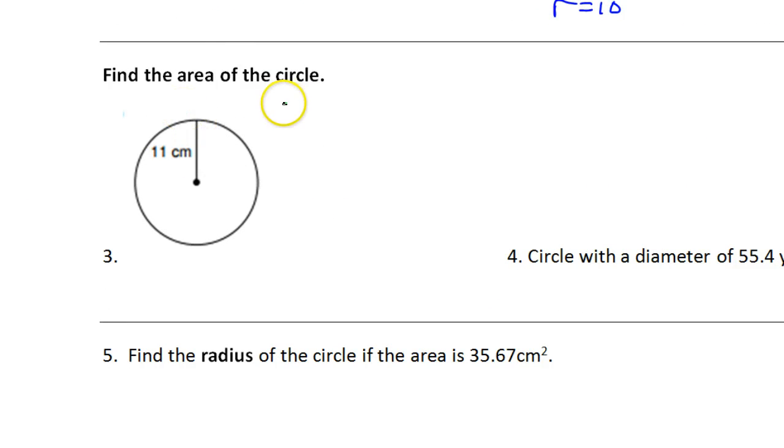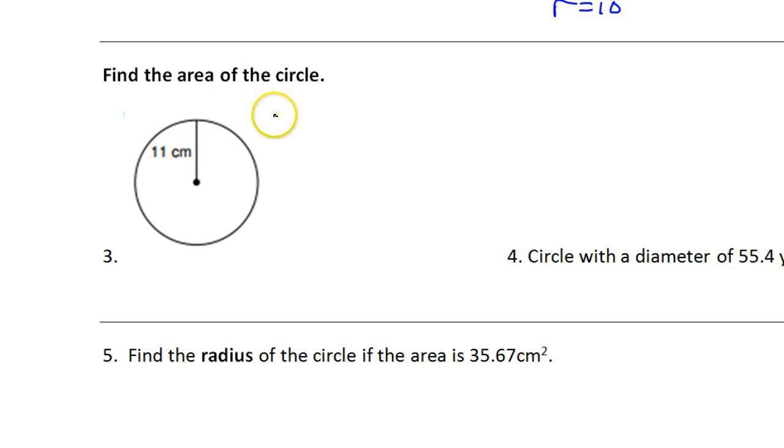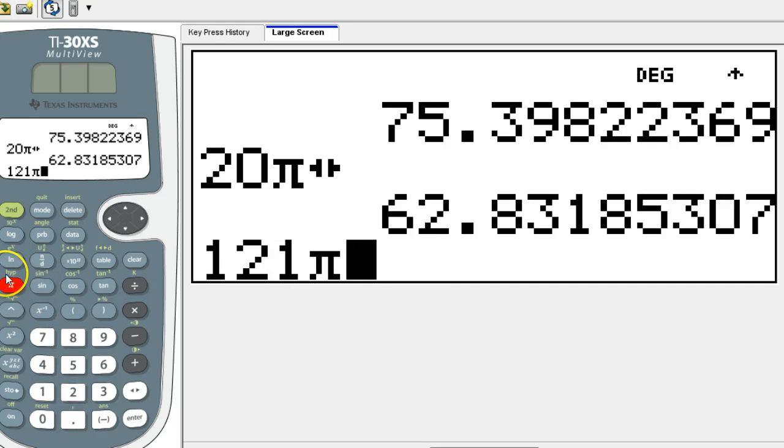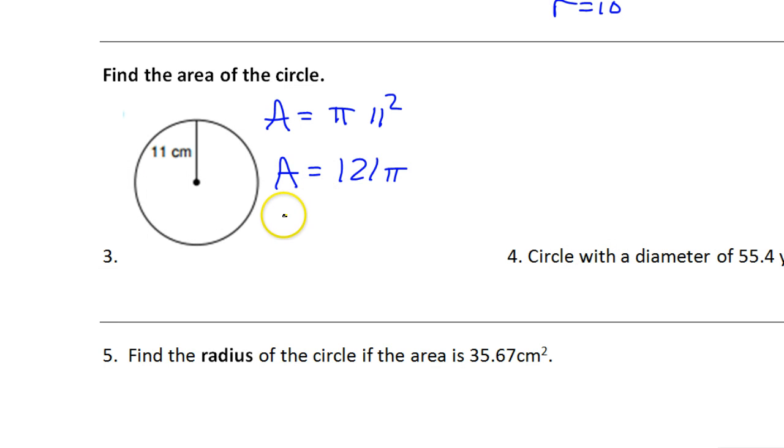Number three, find the area of the circle. Area of a circle is πr². So, that's π times 11 squared. So, that is 121π. If we toggle it, that's 380.13. We're talking about area, so this will be square centimeters.